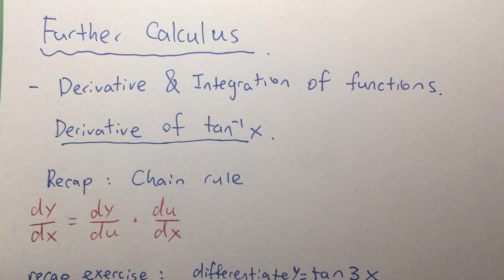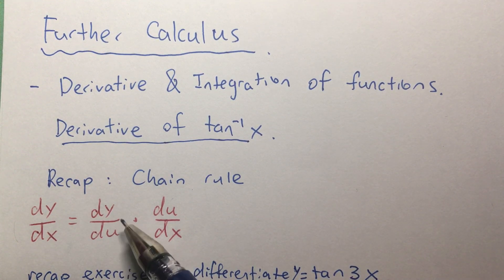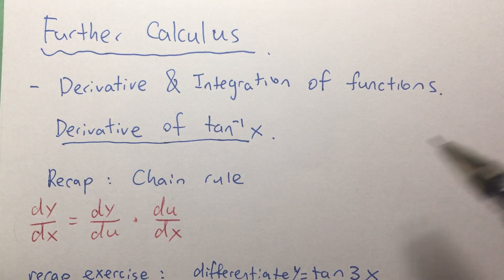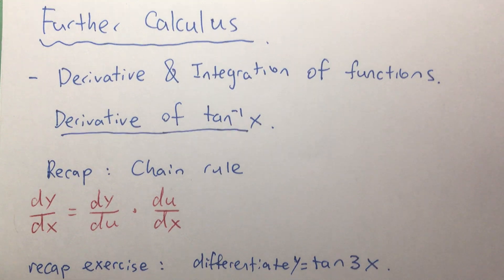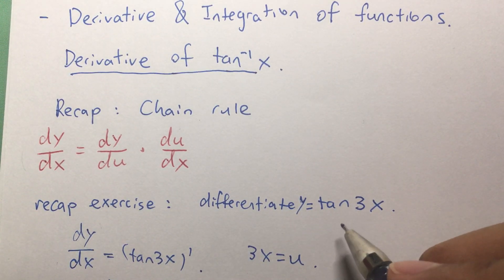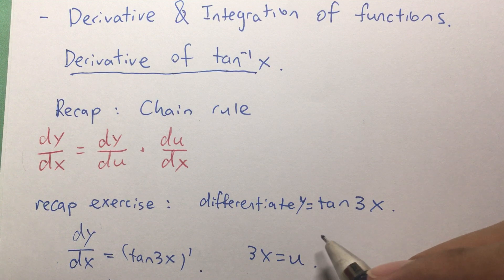Before we start, let's recap chain rule first, which is dy over dx equals dy over du times du over dx. We have talked about this quite a few times now, so let's just try a recap exercise, which is y equals tangent 3x.